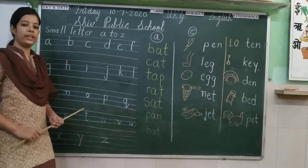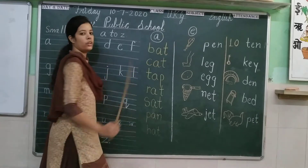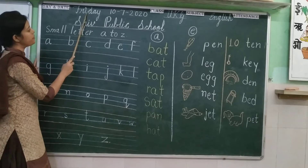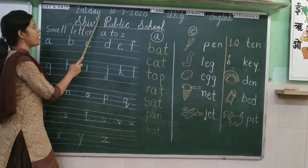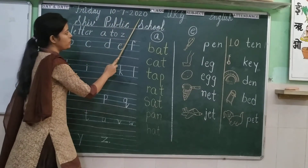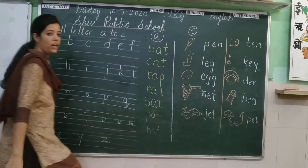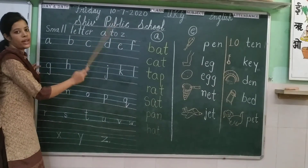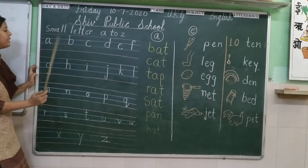Good morning students. Today we will discuss about sound E. Today is Friday, and the date is 10th July 2020. Class subject is English. First, we will revise small letters A to Z, and then we will revise the sound of A. Let's start.